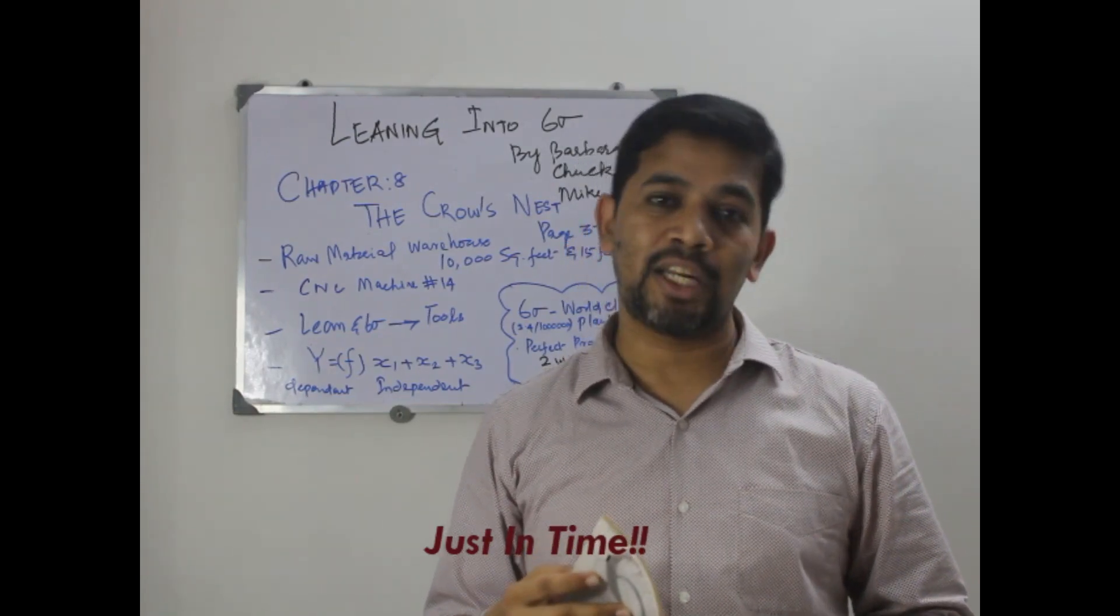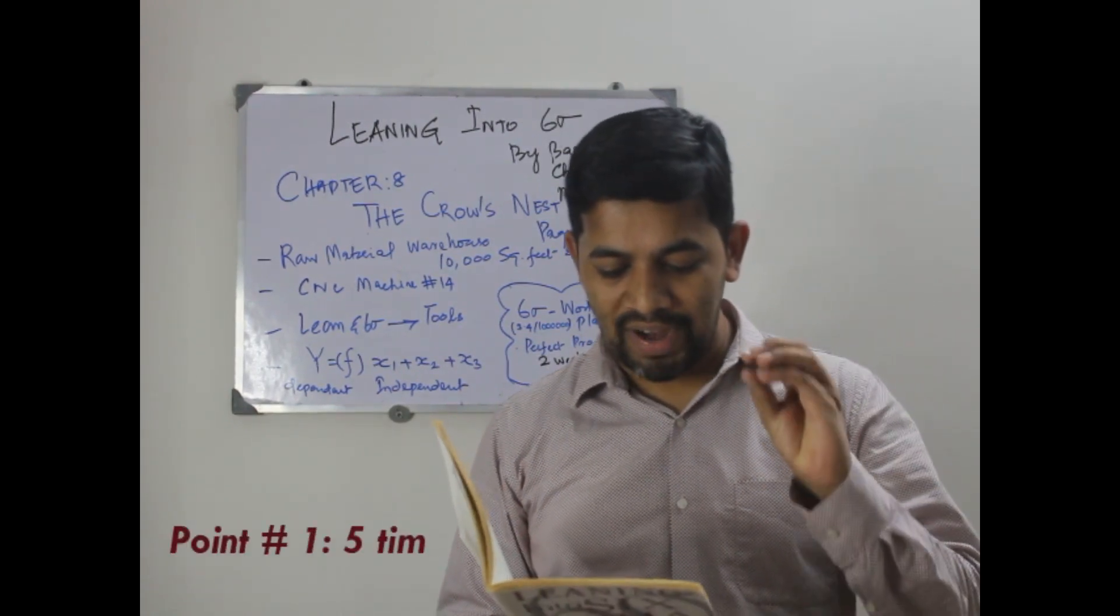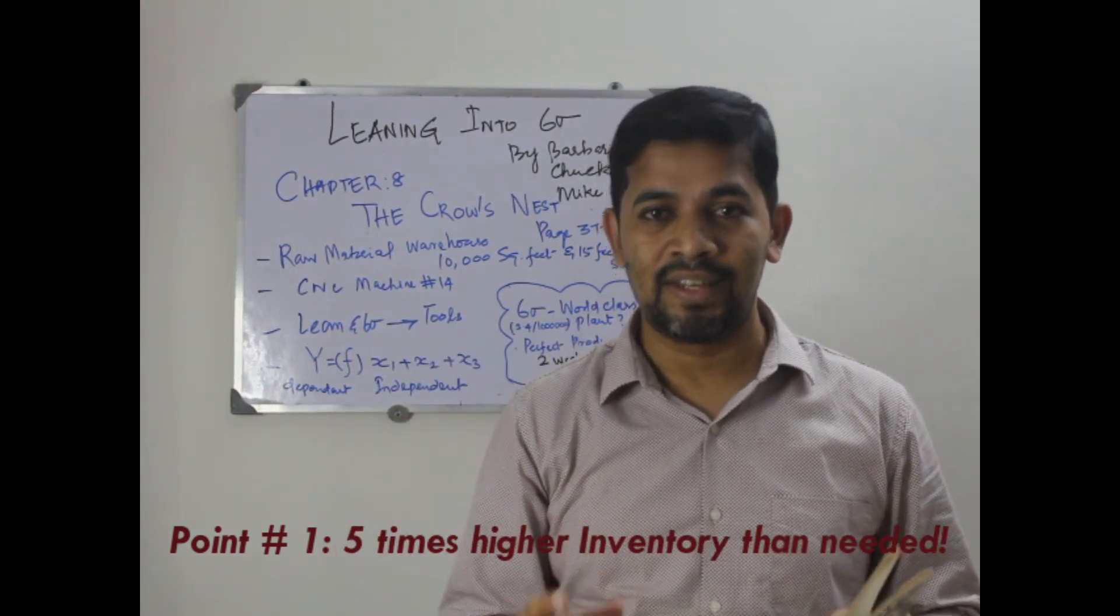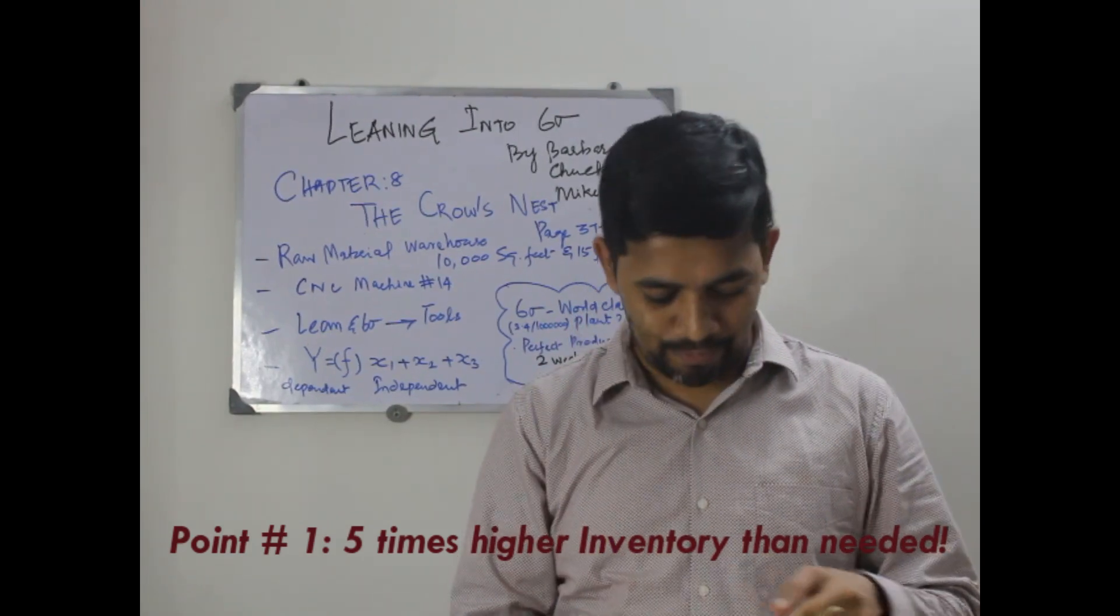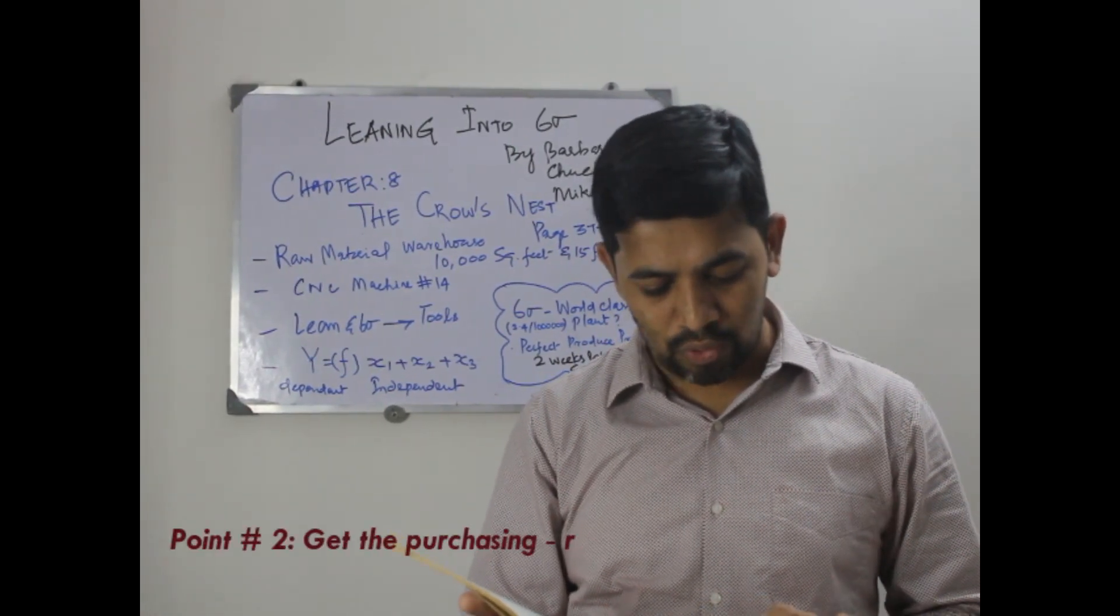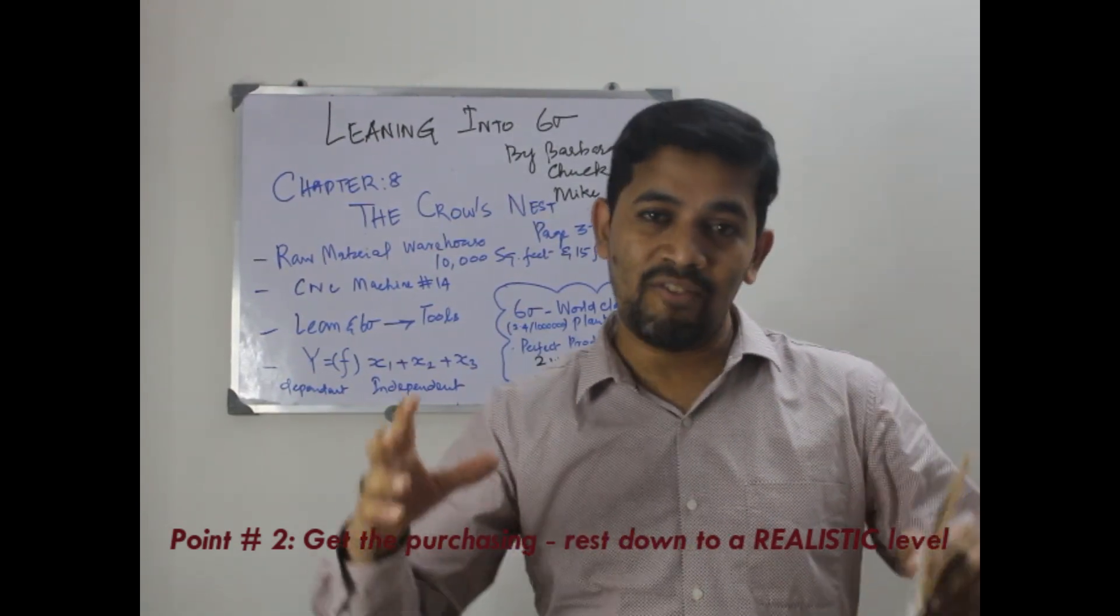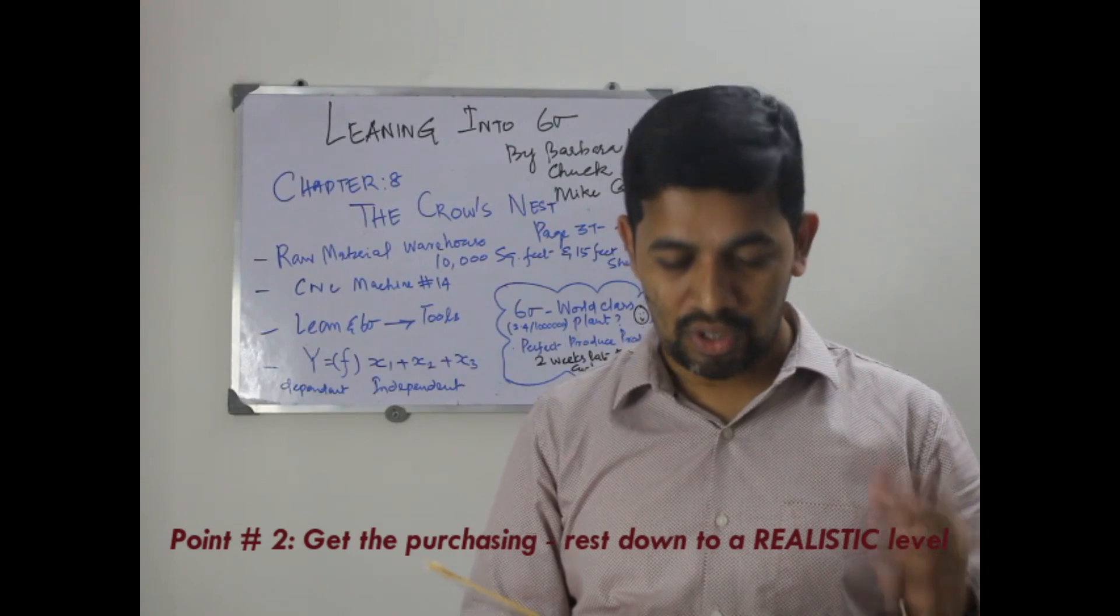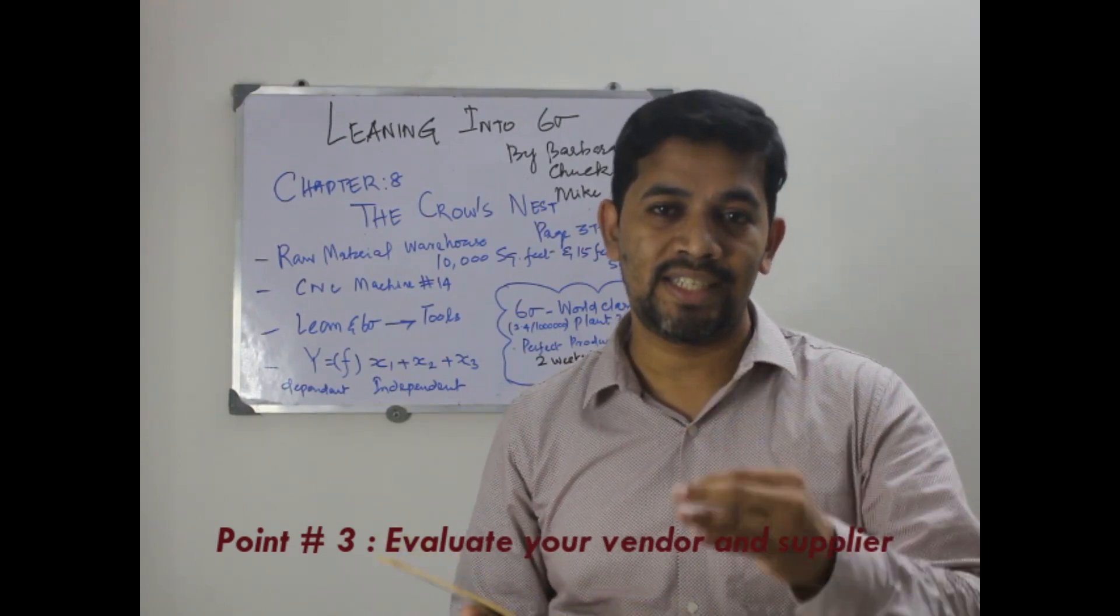He has given eight solutions. First, you have five times the inventory needed in here. For example, if you need only 100 resistors, in the inventory it was found that 500 resistors were available. Number two is purchasing should start working the inventory down to realistic levels. The third point is evaluate your vendors who can supply right, just in time.